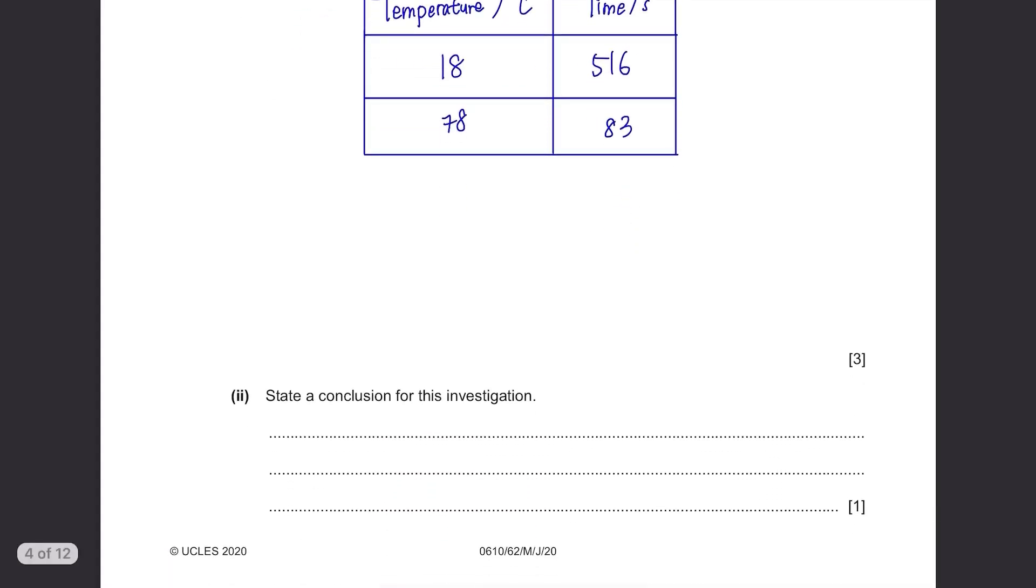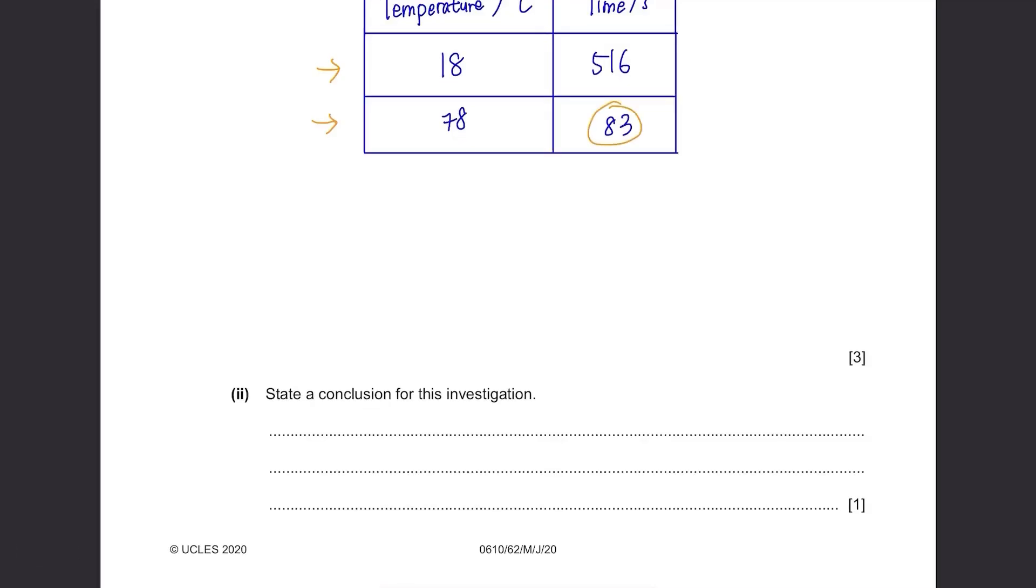Part B: State the conclusion for this investigation. The only difference between these two test tubes was that C had cold water and H had hot water. H took shorter time to change to blue-black in colour, meaning at high temperatures, the iodine solution diffuses faster into the dialysis tubing.